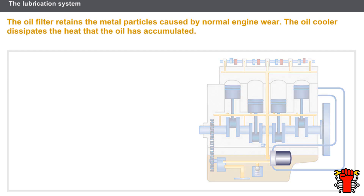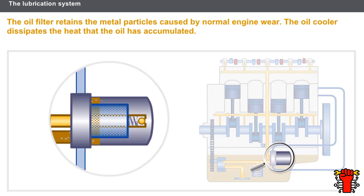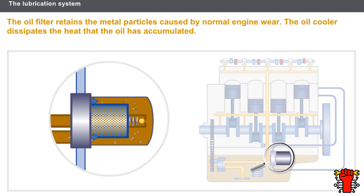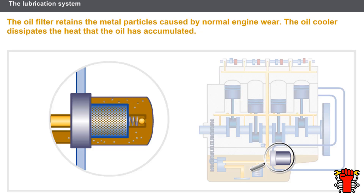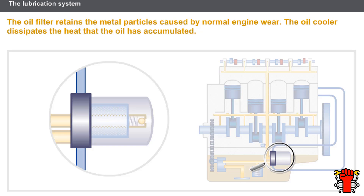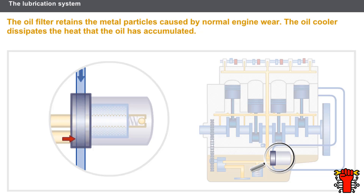Let's look at the oil filter and oil cooler now. The function of the oil filter is to retain the metal particles that result from normal engine wear. The oil filter also has a valve that lets oil pass when there is an obstruction in the filter. The oil cooler is at the base of the oil filter, and its function is to dissipate the heat that the oil has accumulated, using the coolant.